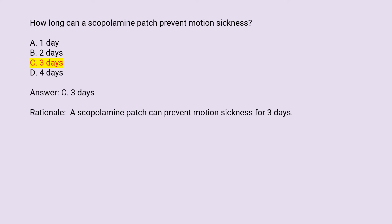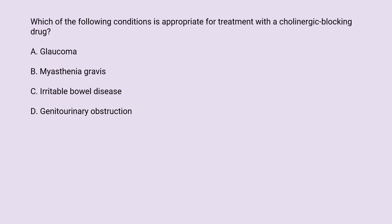Answer: C. 3 days. Rationale: A scopolamine patch can prevent motion sickness for 3 days. Which of the following conditions is appropriate for treatment with a cholinergic blocking drug? A. Glaucoma. B. Myasthenia gravis. C. Irritable bowel disease. D. Genitourinary obstruction.